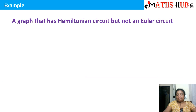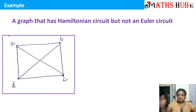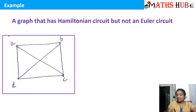Now, a graph which has a Hamiltonian circuit but not an Eulerian circuit. The Hamiltonian circuit is simple: A to B, B to C, C to D, and D to A. But this graph will never possess an Eulerian circuit because all the vertices are of odd degree.